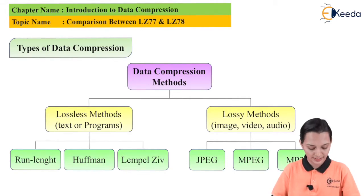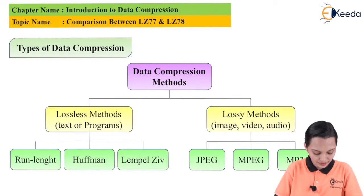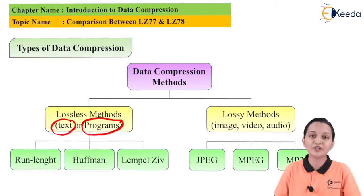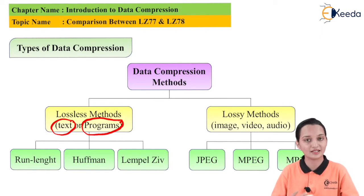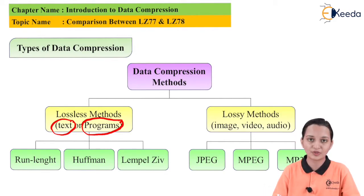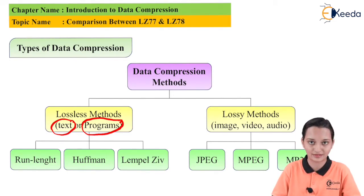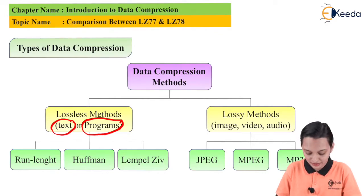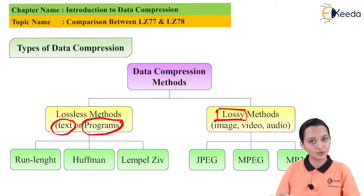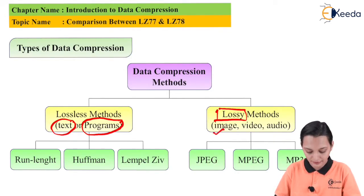Data compression has lossless and lossy methods. Lossless methods can be used on text or programs. Any program written in languages like C, C++, Java, and so on is nothing but a string of characters, and text is also nothing but a string of characters. So while doing data compression using the lossless method, we must try to reduce the data in the form of text or programs. While using lossy methods, we can do data compression on image, video, and audio.